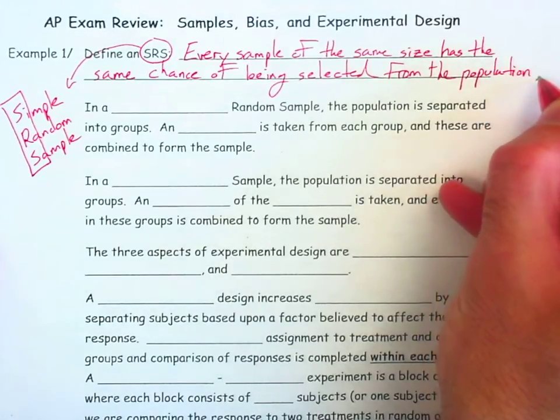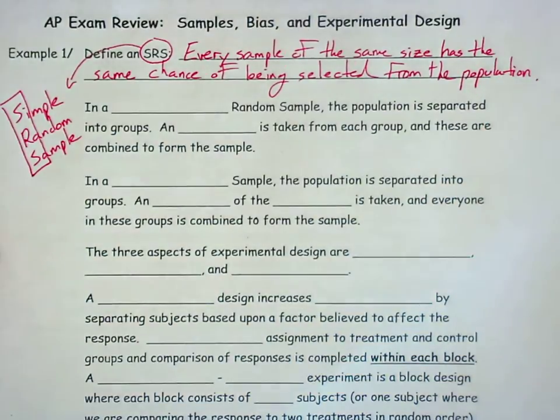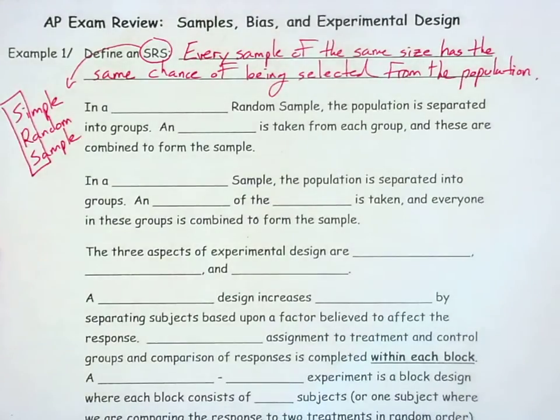Let's say we're taking a simple random sample of 50 individuals from a population. That means every group or every sample of size 50 from that population has the same chance of being chosen.